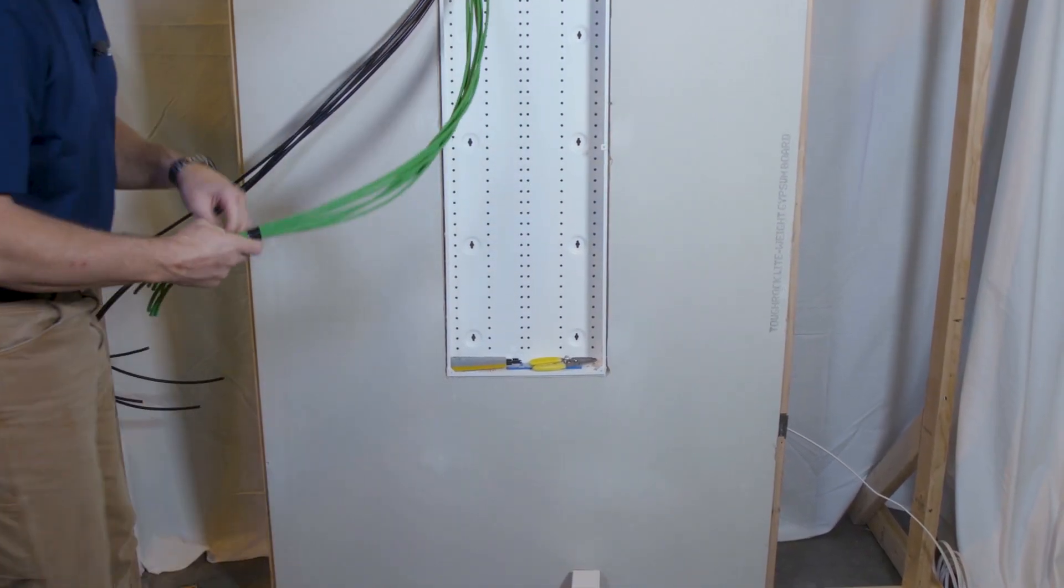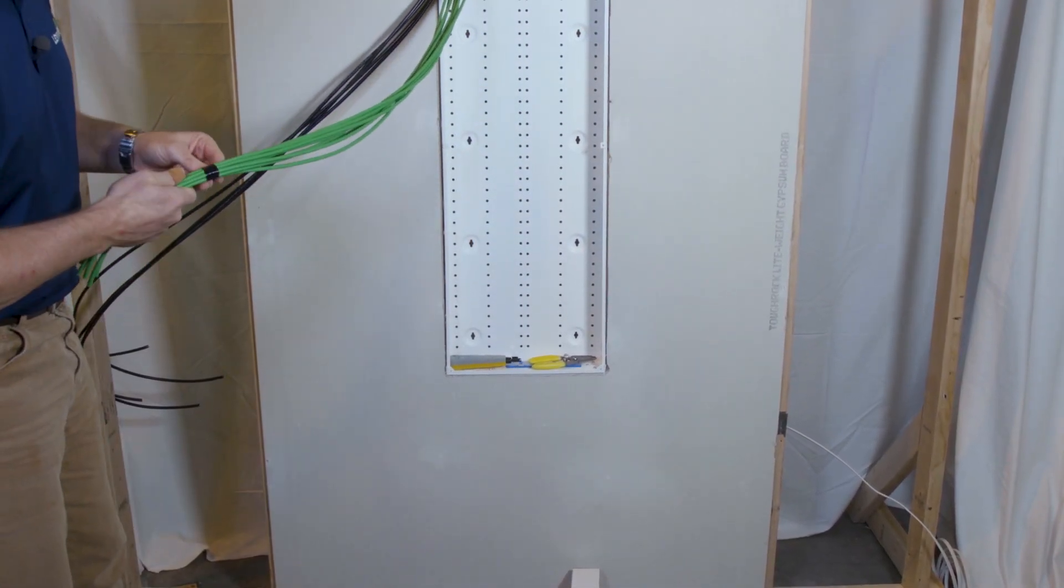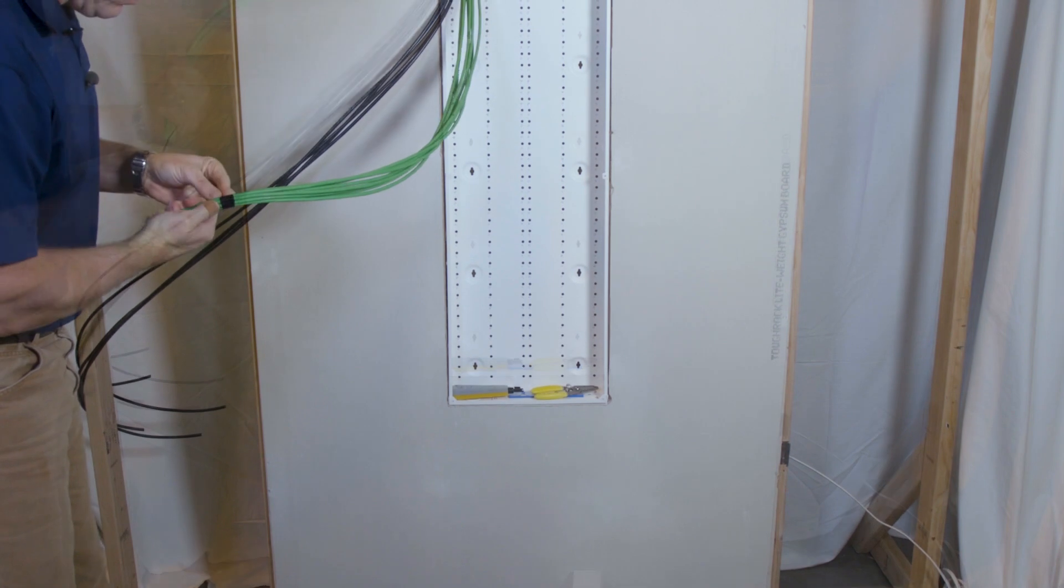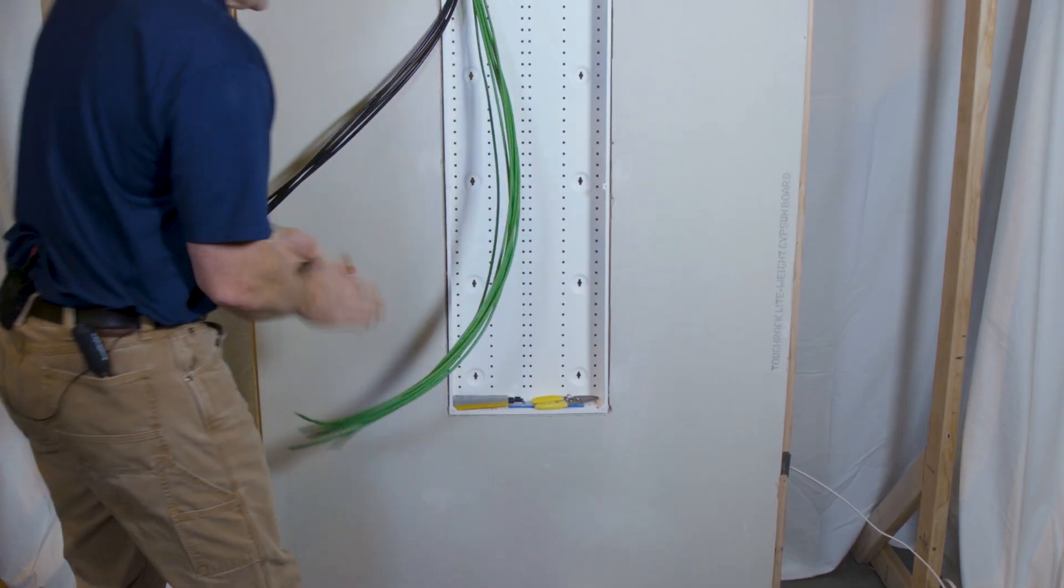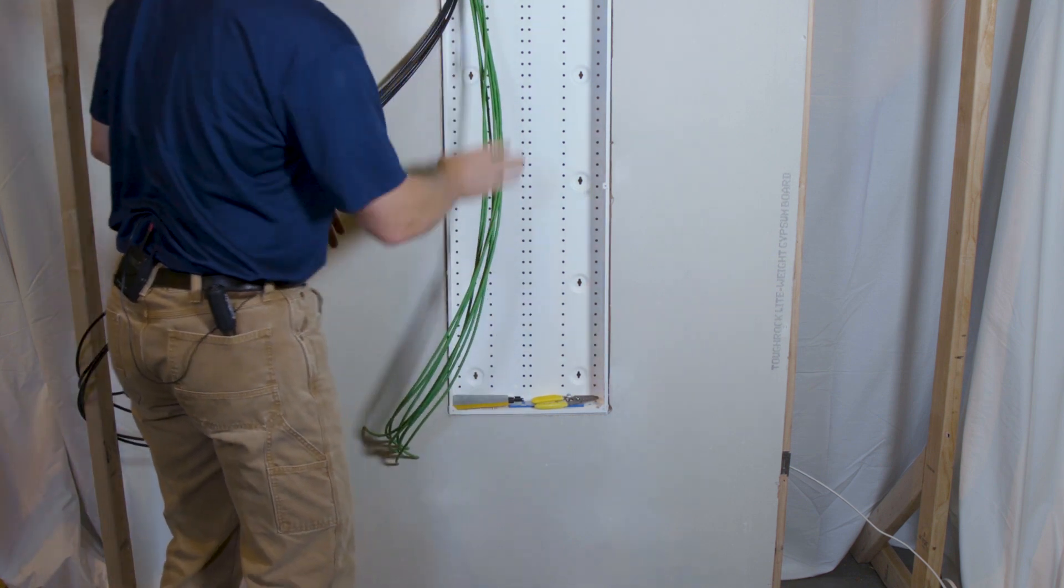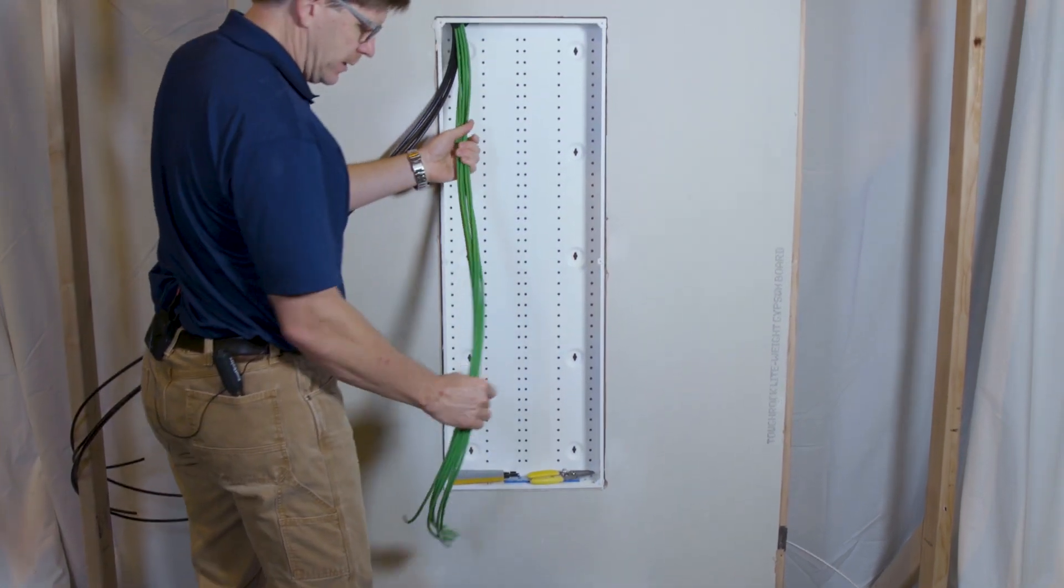For this project, we're going to be using the category six twist and mount. So we'll go ahead and install that next. When you're doing this kind of installation, you want to plan ahead.